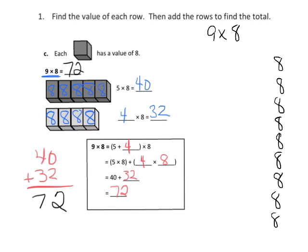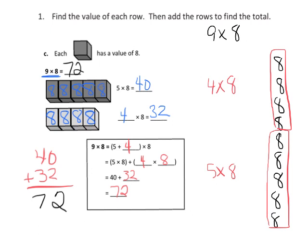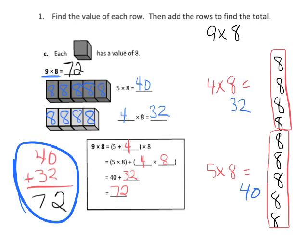And then we can see that 1, 2, 3, 4, 5 right here, that's 5 times 8. And then 1, 2, 3, 4, that's 4 times 8. And 4 times 8 is 32. 5 times 8 is 40. And then we already know that 40 plus 32 is 72. And there's our answer, equals 72.